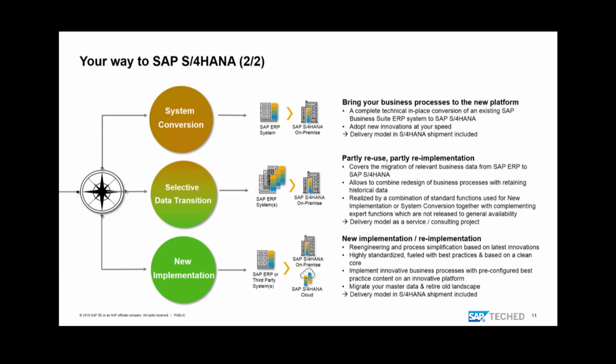For new implementation, the data migration is accomplished by a standard tool — the migration cockpit. The tools are included in the shipment, so no extra charge. You can run it on your own, with a partner, or with SAP. For selective data transition, you have a lot of degrees of freedom in selecting data and composing your target system, but this typically requires combining standard tooling with expert functions delivered only as a service.